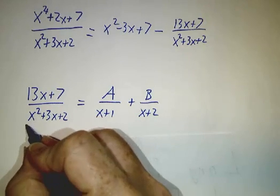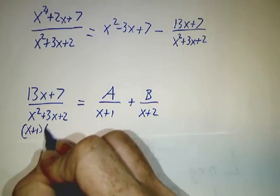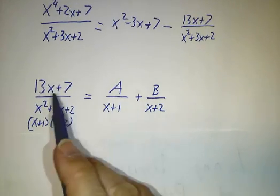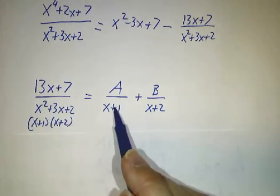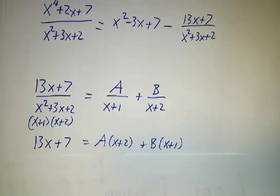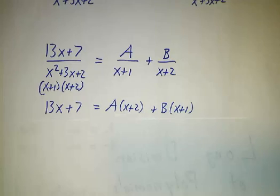This factors as x plus 1 times x plus 2. So we write the ratio as something over x plus 1 plus something over x plus 2. We cross multiply, and then we plug in the root.